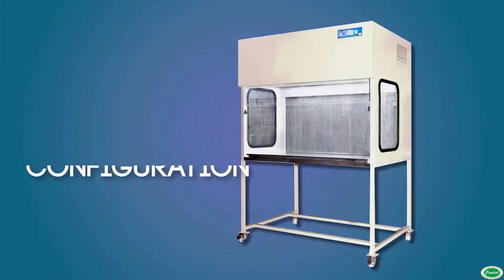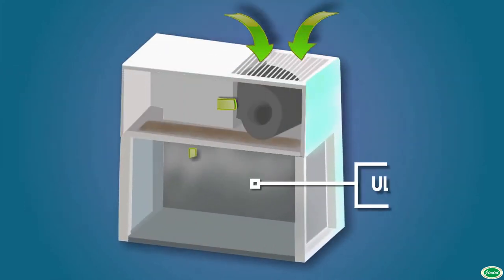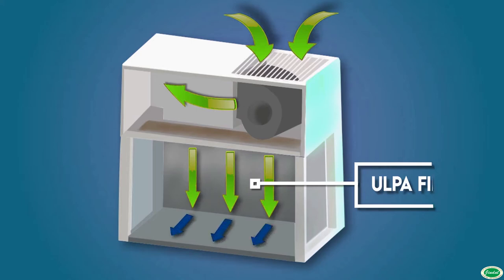All laminar flow clean air cabinets are basically constructed with an outer body of mild steel dually powder coated. The inner work table is made of stainless steel.